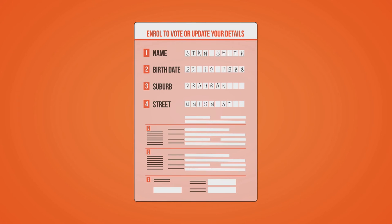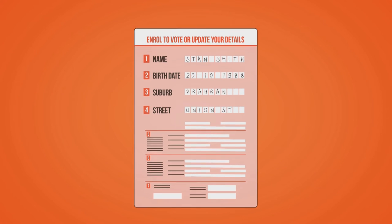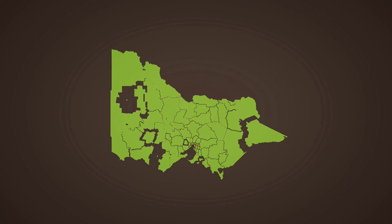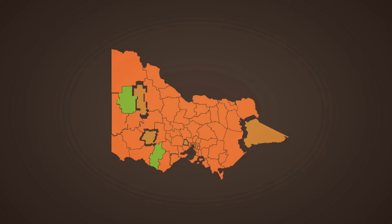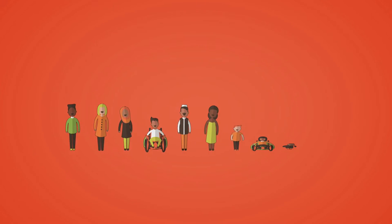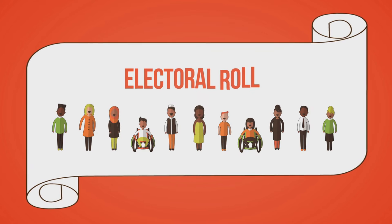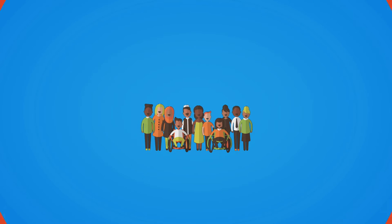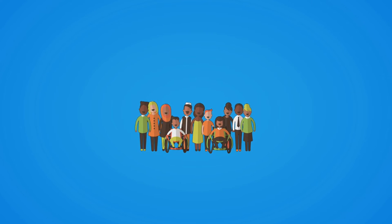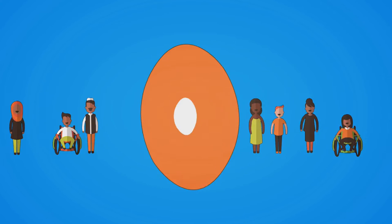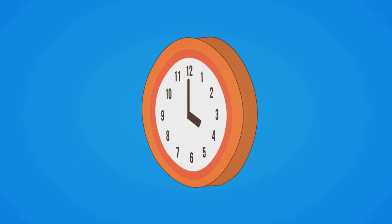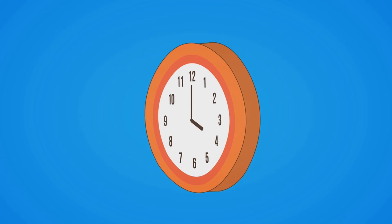Is your enrolment up to date? Victorian Local Council elections are being held this October and compulsory voting conditions apply. Eligible voters should be correctly enrolled. You must be enrolled by 4 o'clock on Friday the 26th of August.